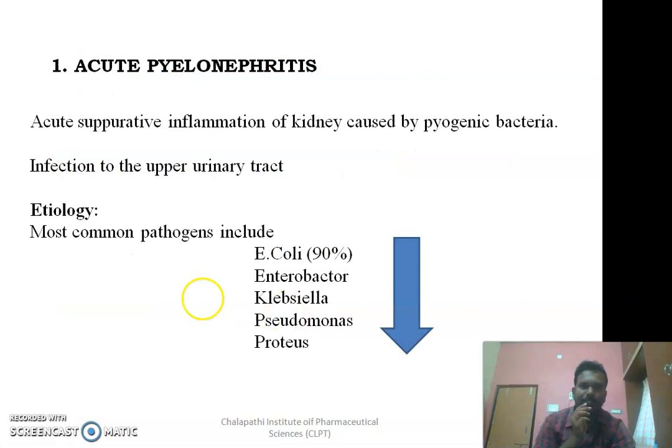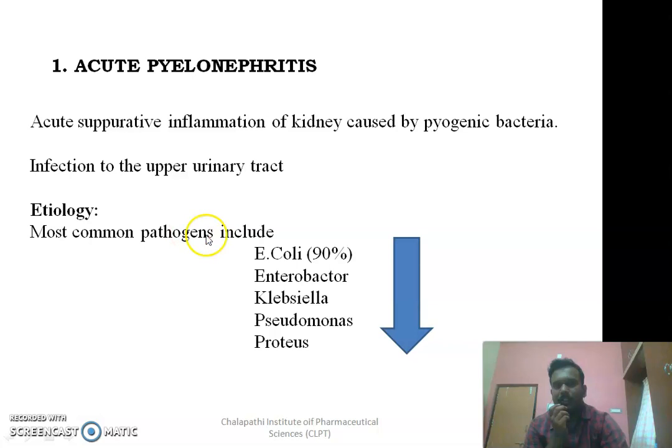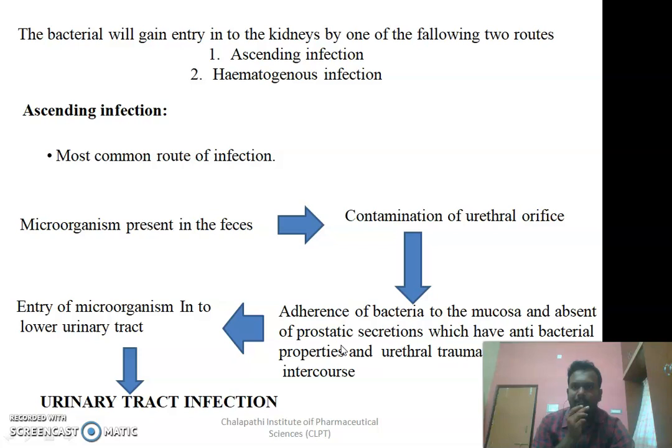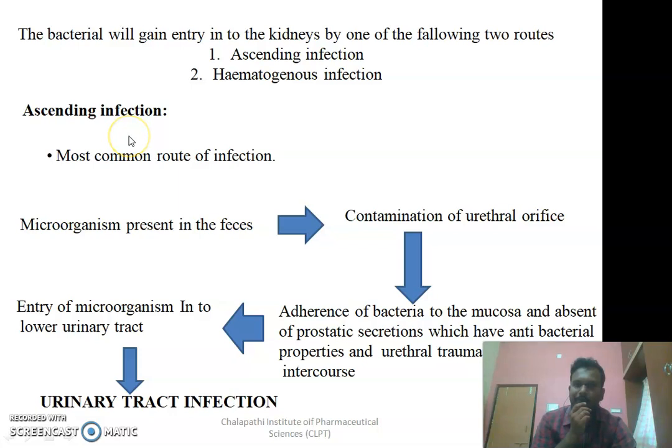Coming to acute pyelonephritis, it is an acute urinary tract infection. The most common causes include E. coli, Enterobacter, Klebsiella, Pseudomonas, and Proteus. Acute pyelonephritis will occur in two ways: one is by ascending infection, and the second one is by hematogenous infection, which is also known as descending infection.